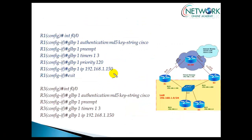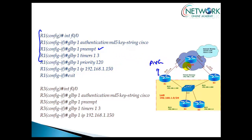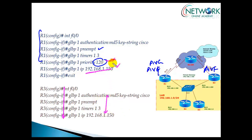The configuration is very similar to HSRP. All commands start with 'glbp' followed by a group number. The authentication command is similar, preemption is disabled by default, hello timer defaults to 3 seconds and dead time to 10 seconds — we can change these to 1 and 3 seconds. Default priority is 100, but to make Router 1 the AVG I'll set its priority to 120 and then define the virtual IP. Router 3 uses the same configuration except without a custom priority, so it takes the default of 100, ensuring Router 1 becomes the Active Virtual Gateway.